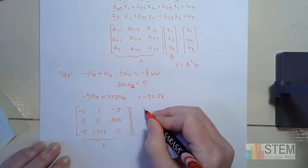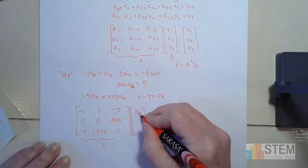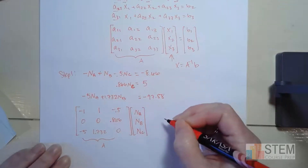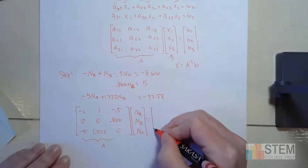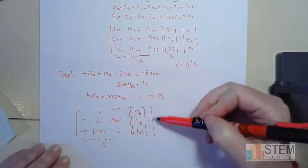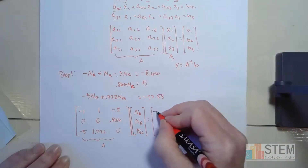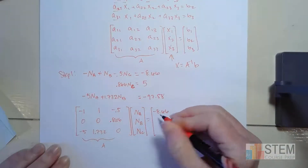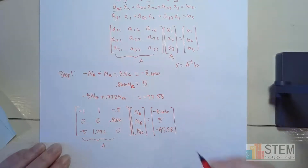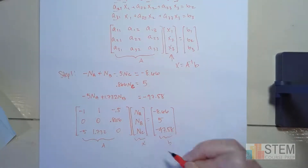Now we do our column vector containing our unknowns: NA, NB, and NC. And the right-hand side gives us matrix B — just copy those numbers down in the same order: −8.66, 5, and −97.58.